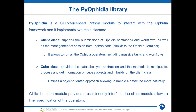I'll now introduce PyOphidia, the Ophidia Python bindings, an open-source Python library developed by CMCC to interact with the Ophidia framework. It represents the programmatic interface for the framework. The library provides two main classes: the client class and the cube class. The client class implements the logic to establish a connection with the Ophidia server and manage the submission of commands and workflows and interpretation of their responses. The cube class provides a more user-friendly interface, abstracting from the declarative format used to define operator commands, and maps all the operators as methods of the cube class.